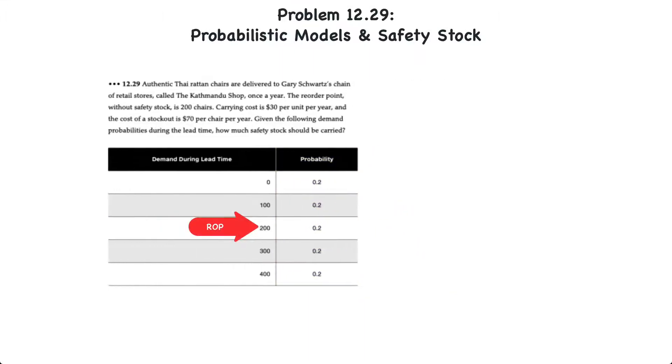The reorder point is at 200 units. At the reorder point of 200 units, if demand is 200 units as expected then no safety stock is required. However if demand ends up being 300 units, then the company would need to carry 100 units of safety stock to avoid stocking out. Similarly if demand ends up being 400 chairs, then the company would have to carry 200 units of inventory to avoid stocking out.